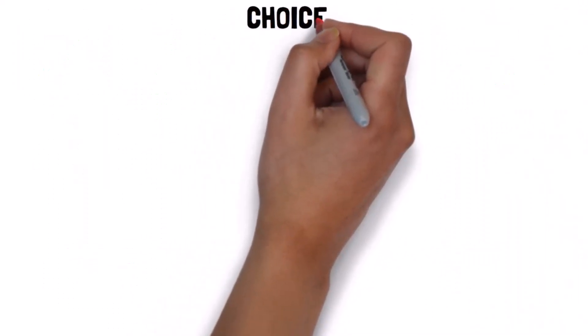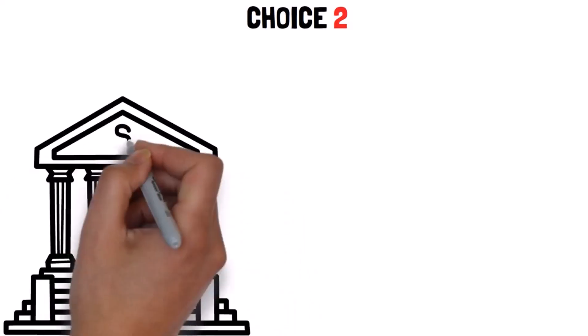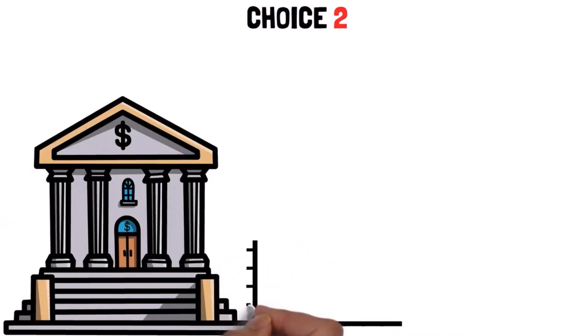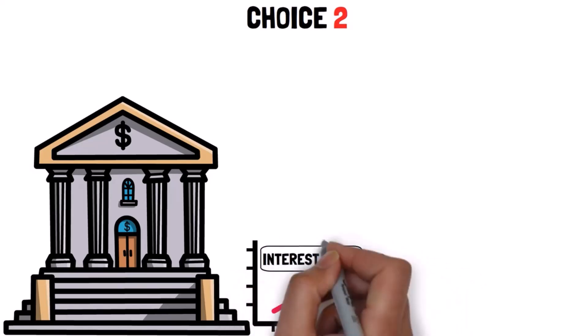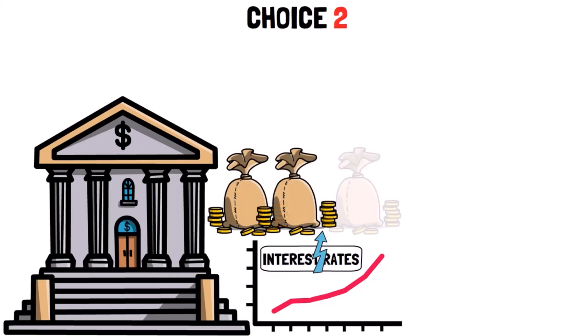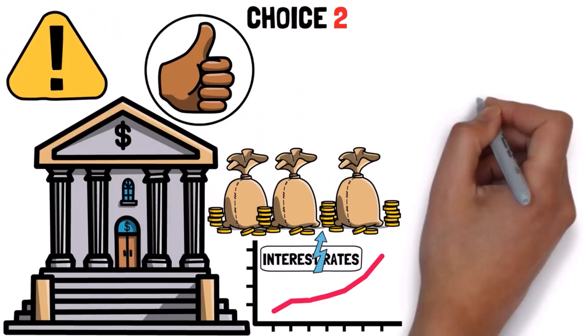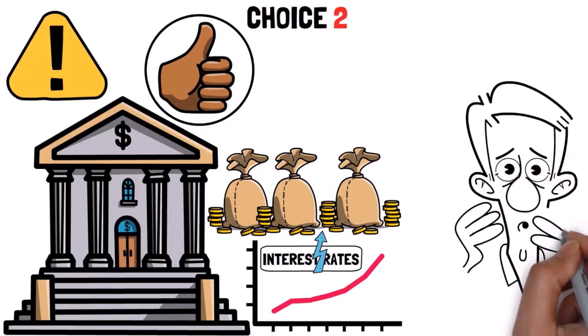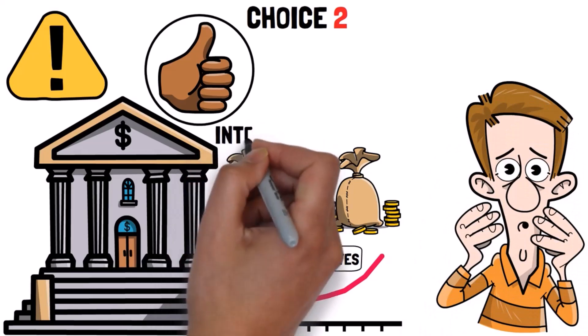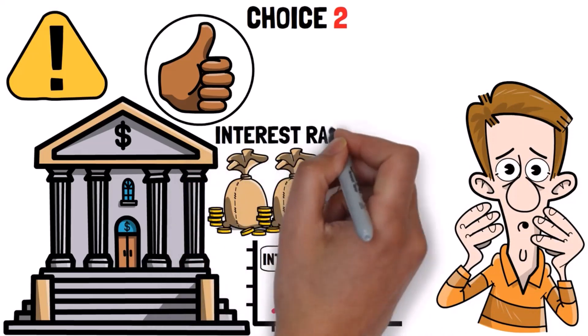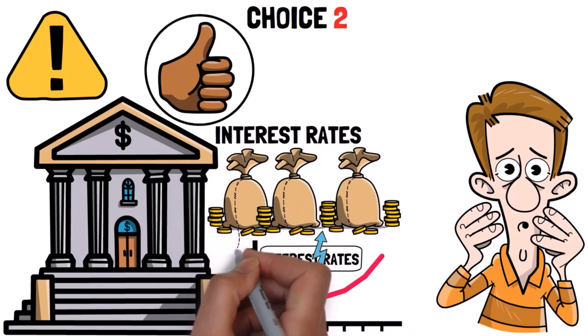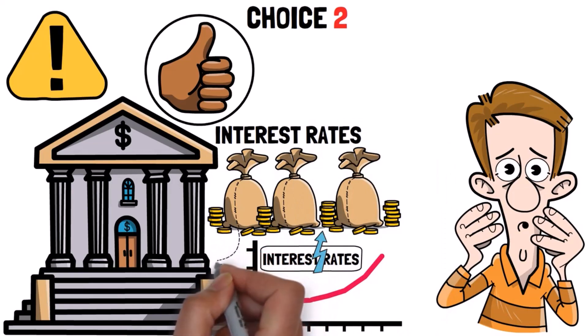Choice two: The banker can decide to do something else. When the prices start rising too fast, the banker can increase interest rates instead of lowering them. This makes it harder for people to borrow new money and they have to focus on paying off their old debts. This might sound good, but it has its problems too. It can cause economic pain because paying off debts becomes more expensive. The banker keeps raising interest rates until people start paying off their debts, but the damage is already done.